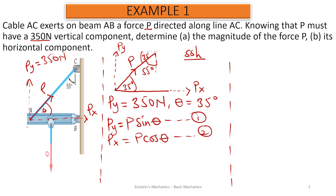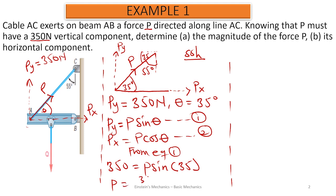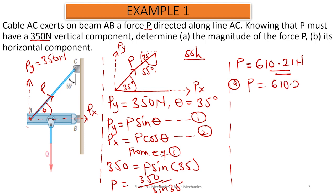Since we have the magnitude for the vertical component PY as 350 N, from equation 1 we can write: 350 equals P sine 35 degrees. Making P the subject, P is equal to 350 divided by sine 35. When you calculate this, P gives you 610.21 Newton. So for part A, the magnitude of force P is equal to 610.2 Newton.